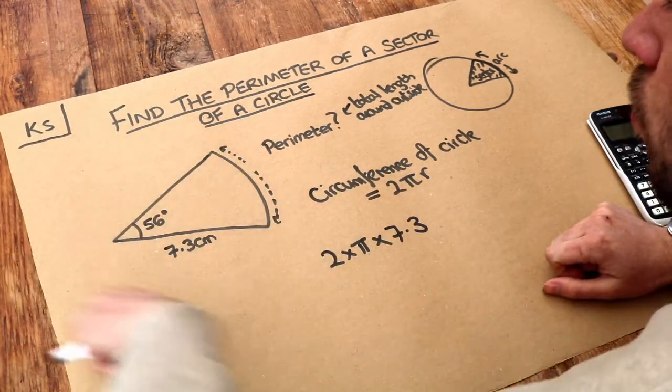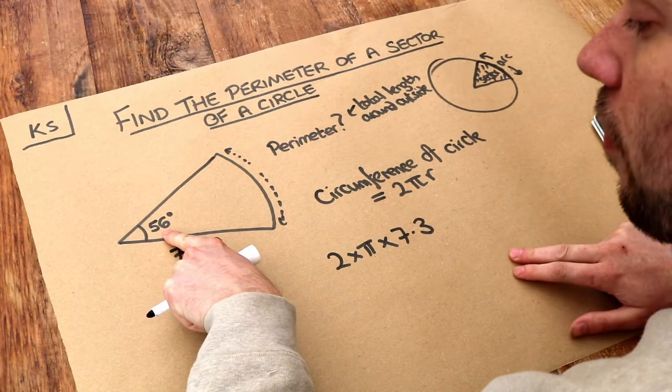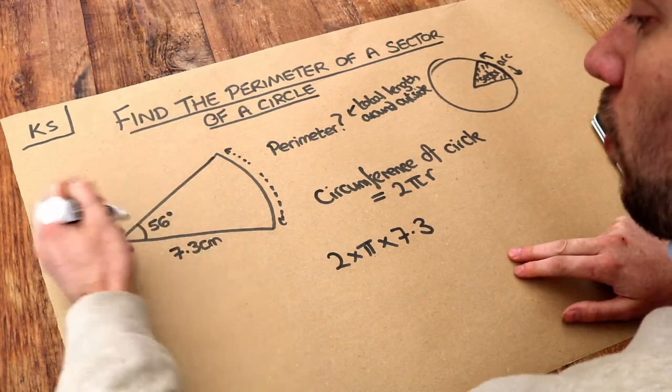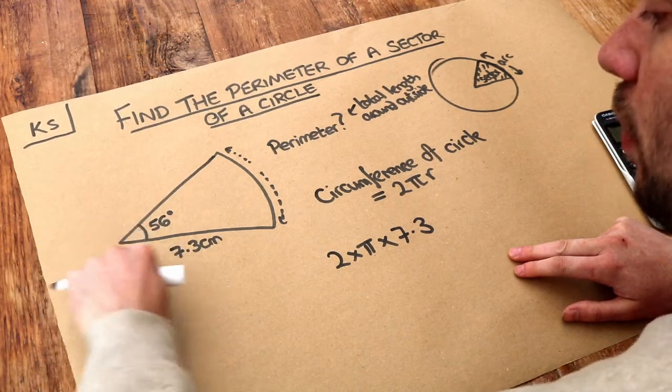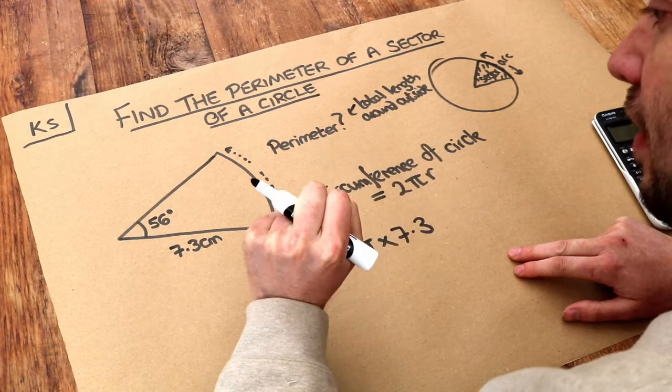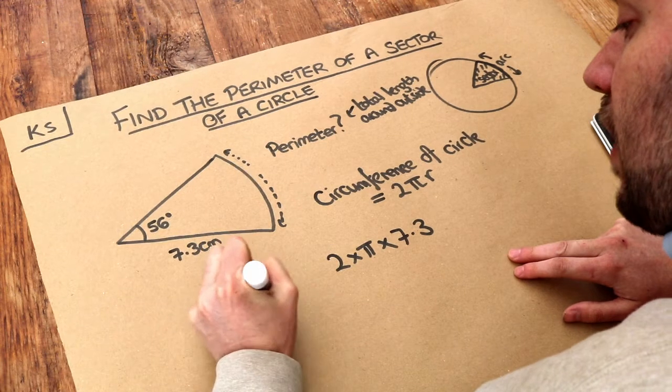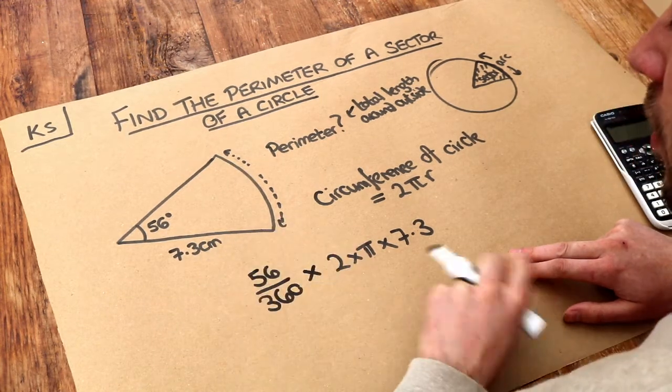But we don't want the full circumference of a circle, we just want this appropriate fraction of it. Now what fraction of the circle is it? Well the total angle at this point would be 360. So we just want 56/360ths of a full circle.